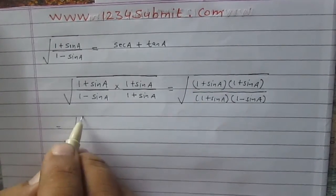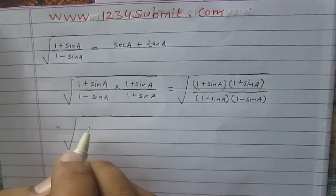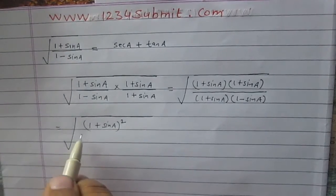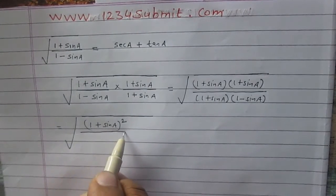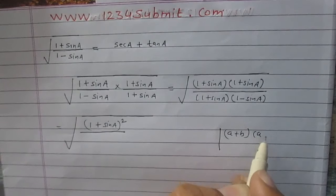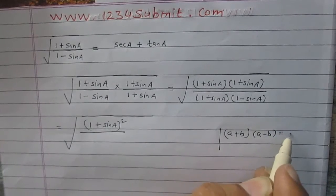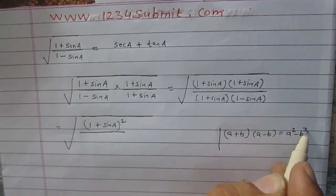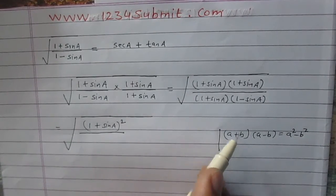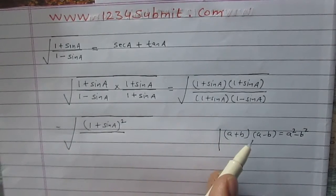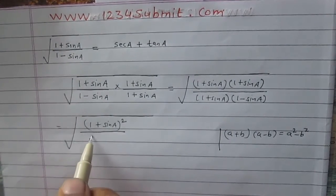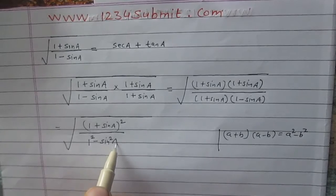So the numerator can be written as (1 plus sin a) whole square. For the denominator, using the identity (a + b)(a − b) = a² − b², where a stands for 1 and b stands for sin a, we get 1 squared minus sin squared a.